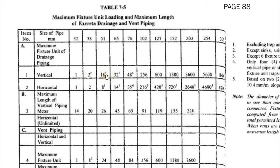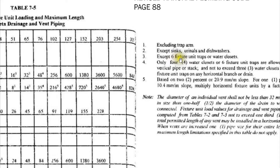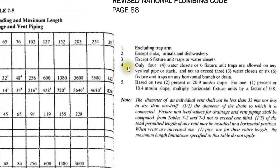The value 16 has a superscript of 3. Note number 3 says: except six fixture unit traps or water closets. So if you have a water closet connected to your vertical pipe, do not adapt 16 — move to the next higher value. Similarly, 32 also has superscript 3, so move to 48. The value 48 has superscript 4. According to note number 4, only four water closets or six fixture unit traps are allowed on any vertical pipe or stack. If you have five or more water closets on the vertical pipe, move to the next higher value.